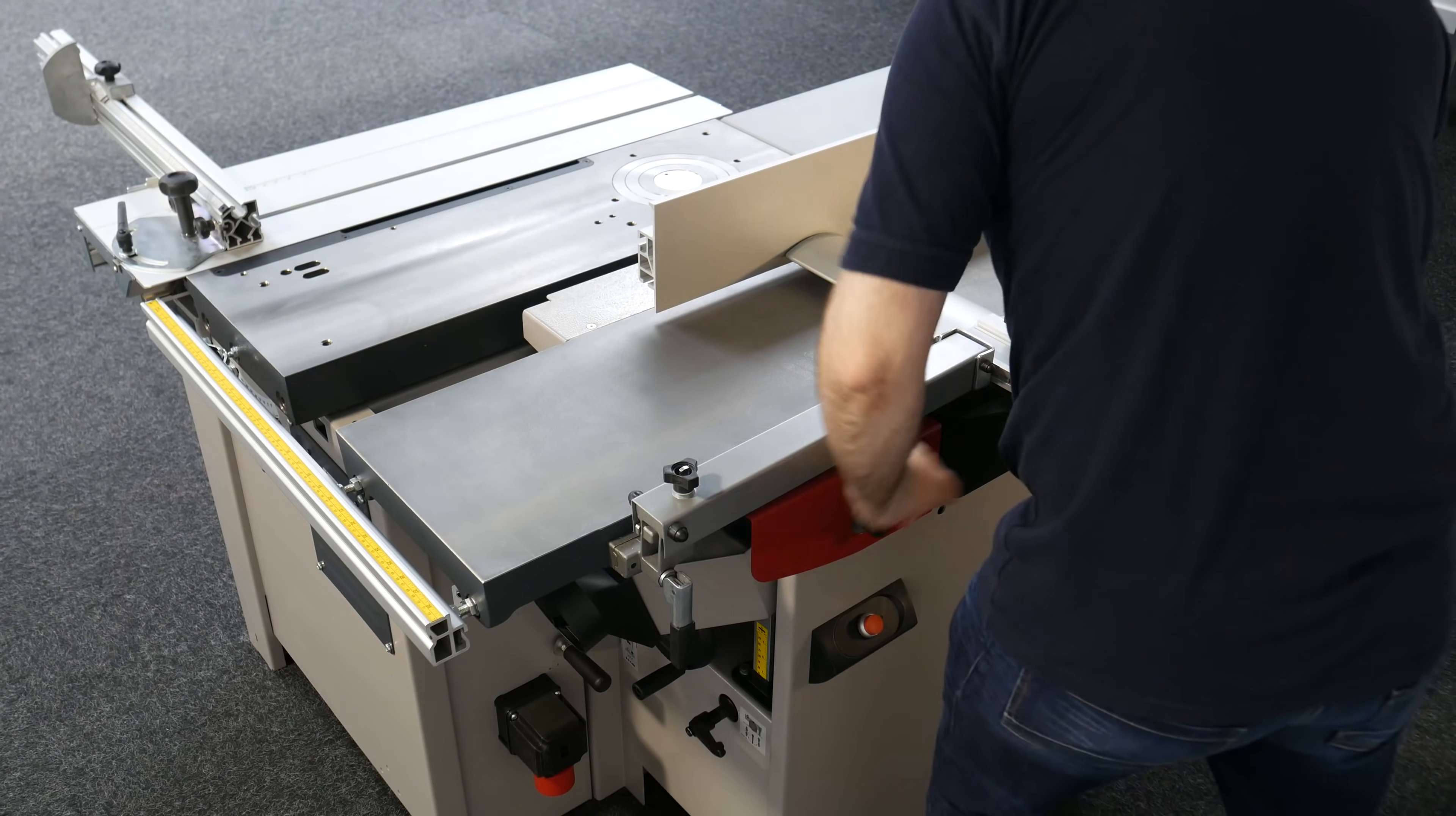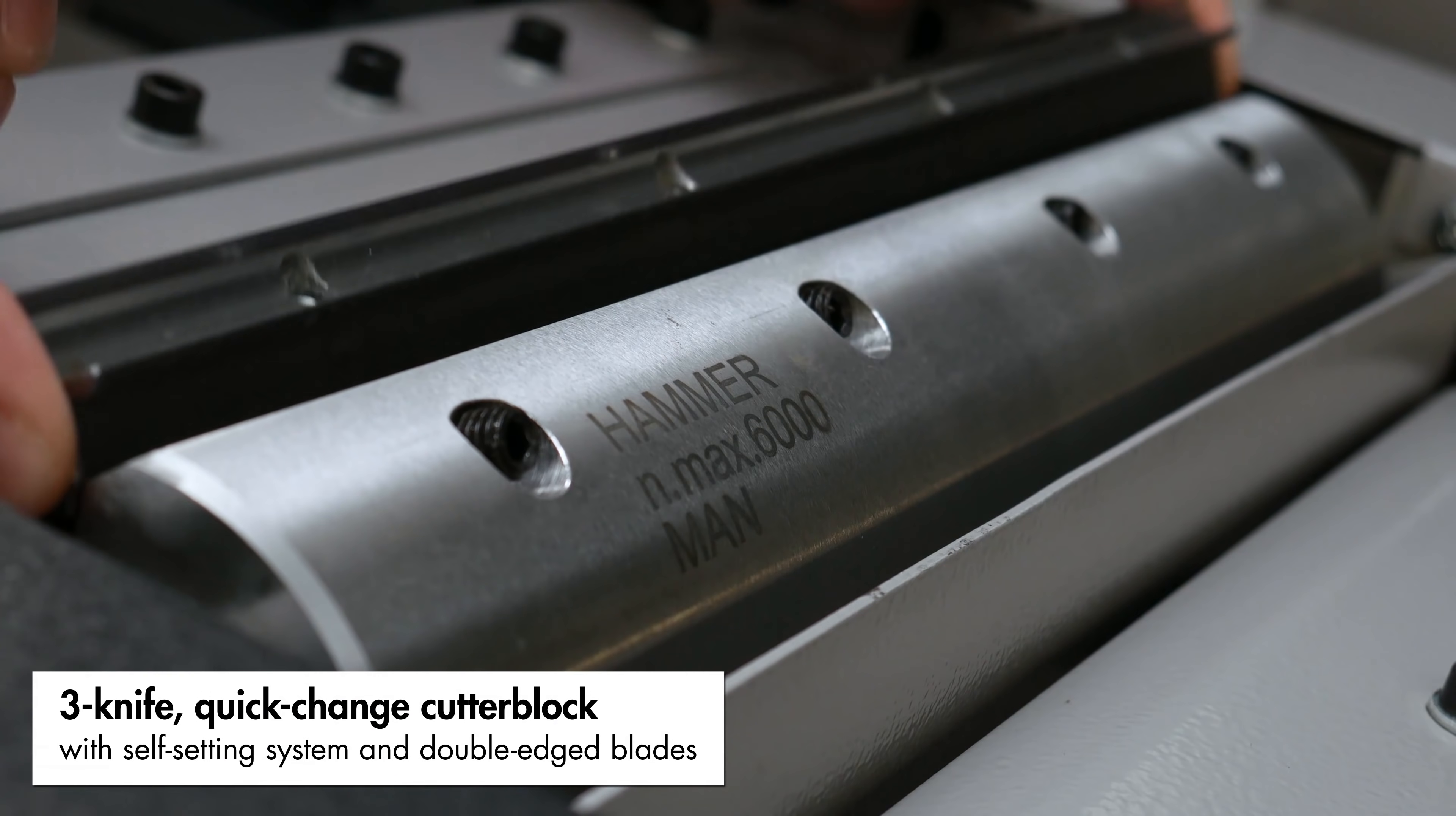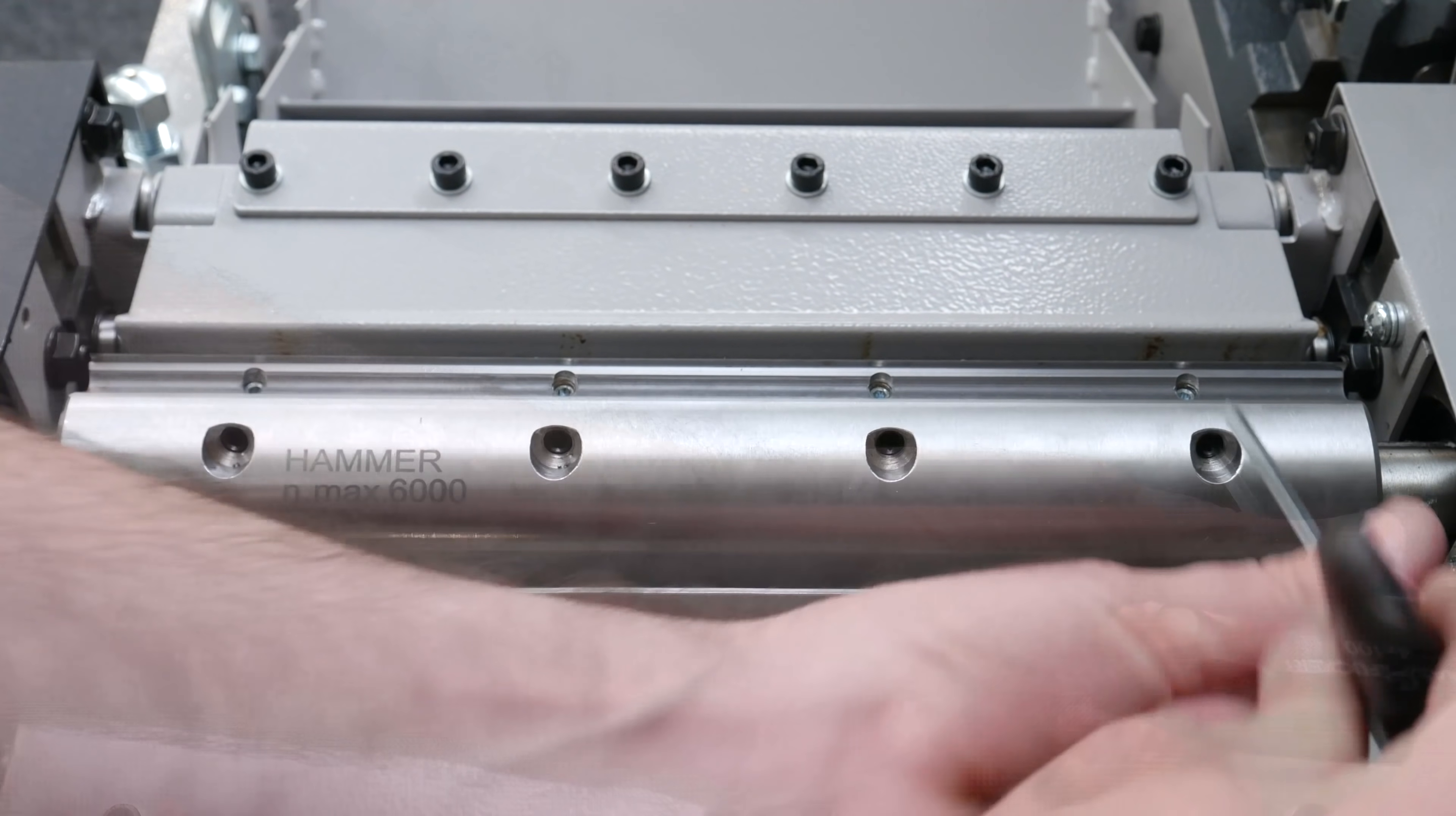In its standard form, the C331 features a 3-knife quick-change cutter block whose self-setting system and double-edged blades allow changes to be made in a matter of minutes without the need for expensive adjustment tools to be purchased.